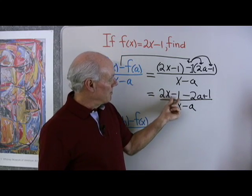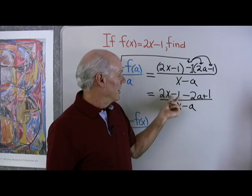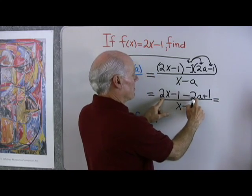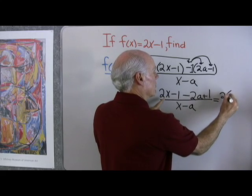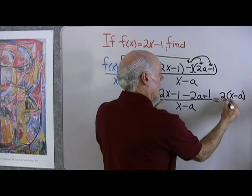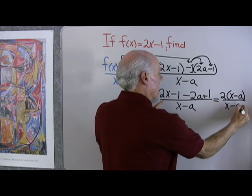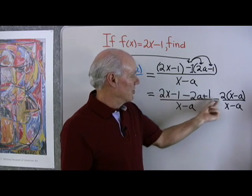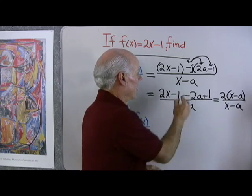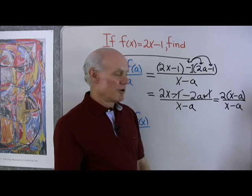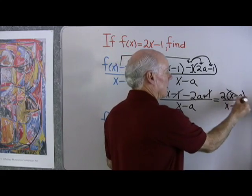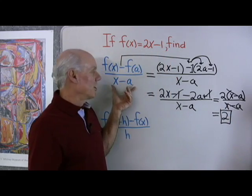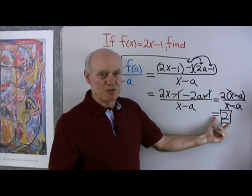2x minus 1 minus 2a plus 1. The negative 1 and the positive 1 add to 0. I'm going to have 2x minus 2a, and I'm going to factor a 2 out, because I see that factor of x minus a in the denominator. I notice there's a 2 common to each of those terms, so I factor that out. The negative 1 and positive 1 add to 0, so now I can reduce to lowest terms and I end up with just 2.